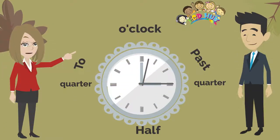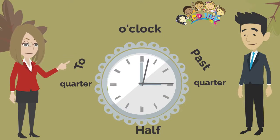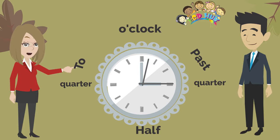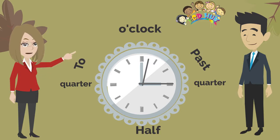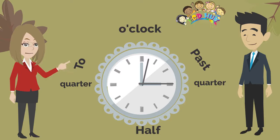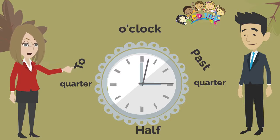But remember, if the long hand is at the 3 or 9 — that means at 15 and 45 minutes — in this case we can say 'quarter past' or 'quarter to', then we say the hour shown by the short hand. So in this clock, the time is quarter past 1.